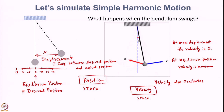The position stock needs to be changed by a flow — the change in position, which acts as the flow affecting position, is nothing but the velocity. What affects the velocity over time — the flow into the velocity stock — will be the change in velocity, also known as acceleration.